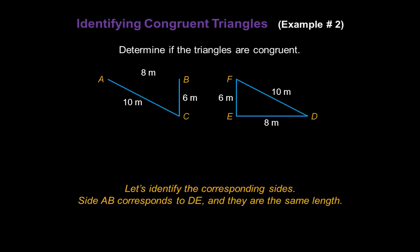Side AB in the first triangle corresponds with DE in the second triangle, and they're the same length. They're both 8 meters. So we can write that the line segments are congruent. Line segment AB is congruent with line segment DE.